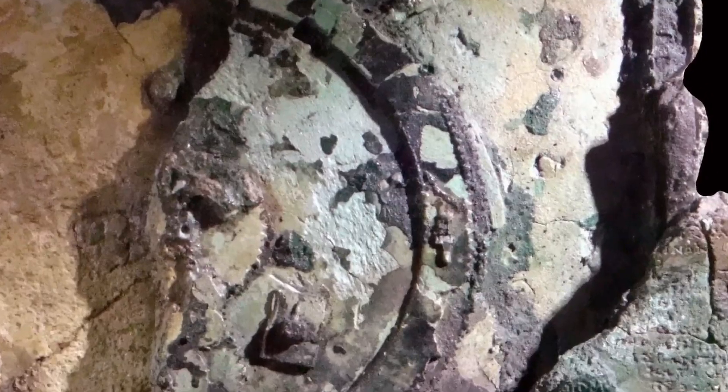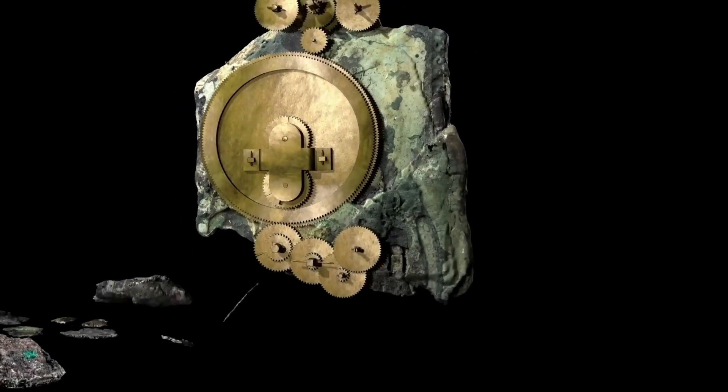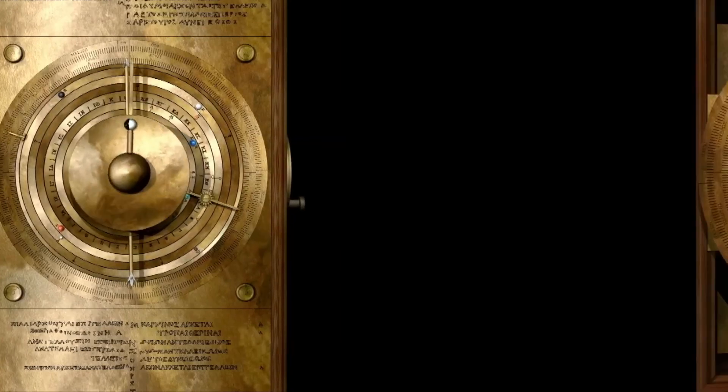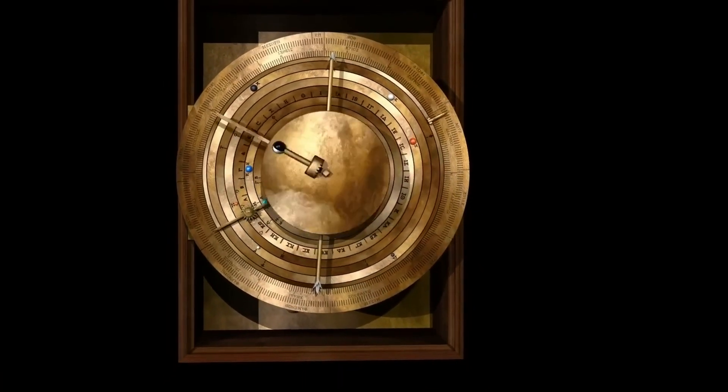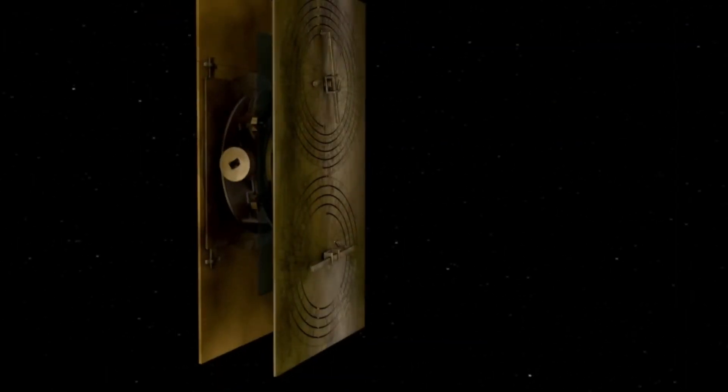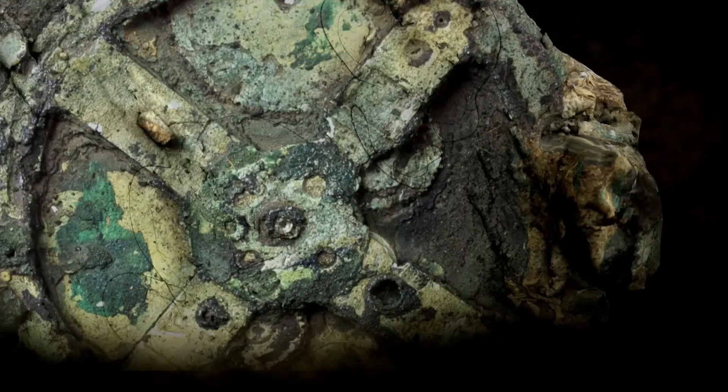Recent research has further clarified the mechanism's design. In 2016, scientists decoded inscriptions revealing cycles for Venus and Saturn. In 2021, a team from University College London created a detailed digital model, showing how all components work together.